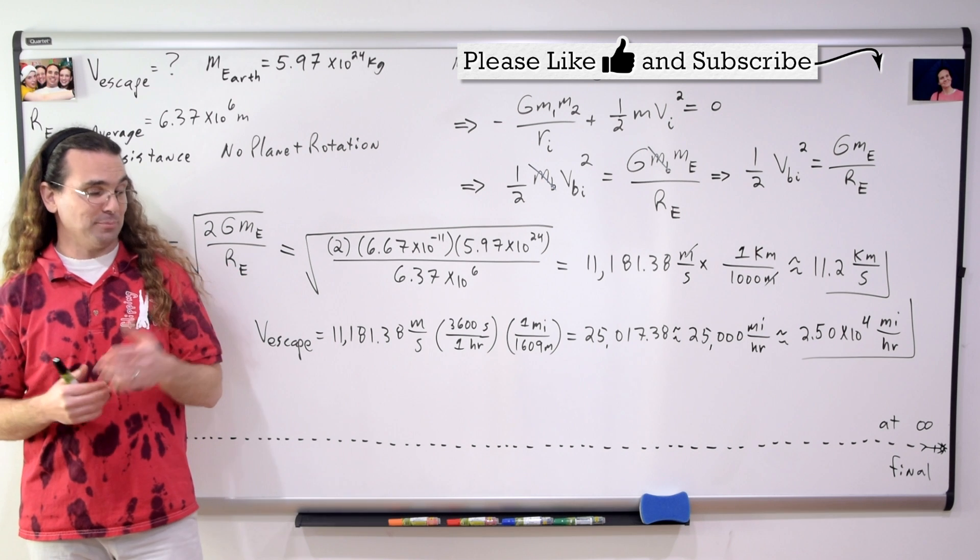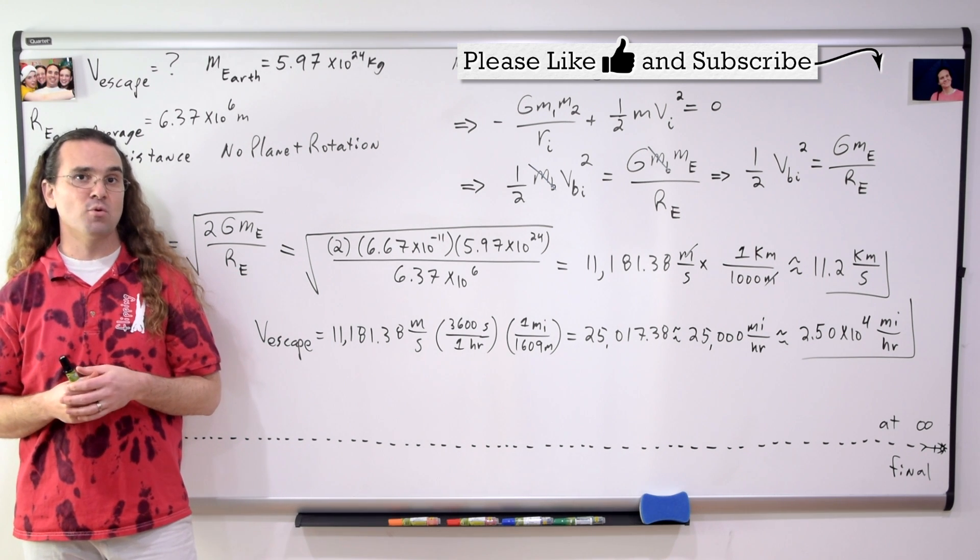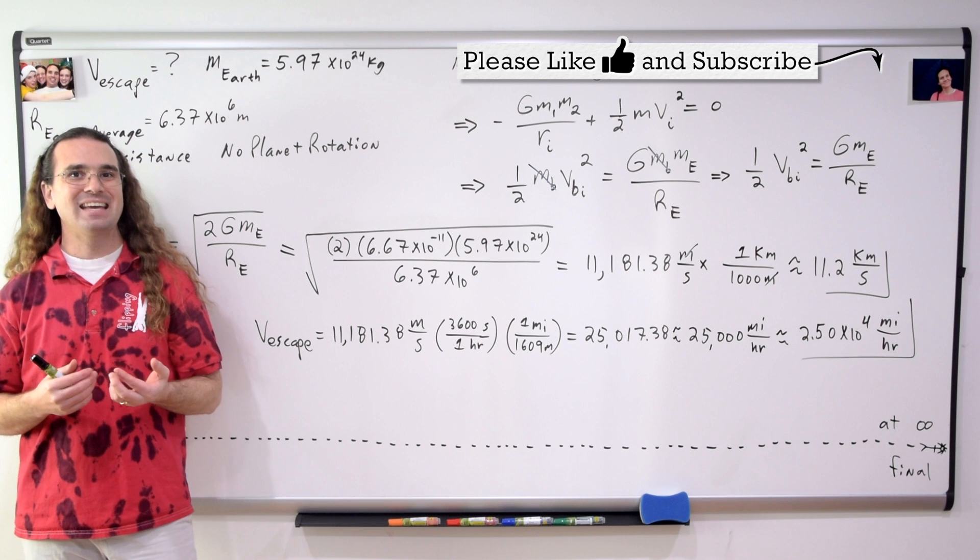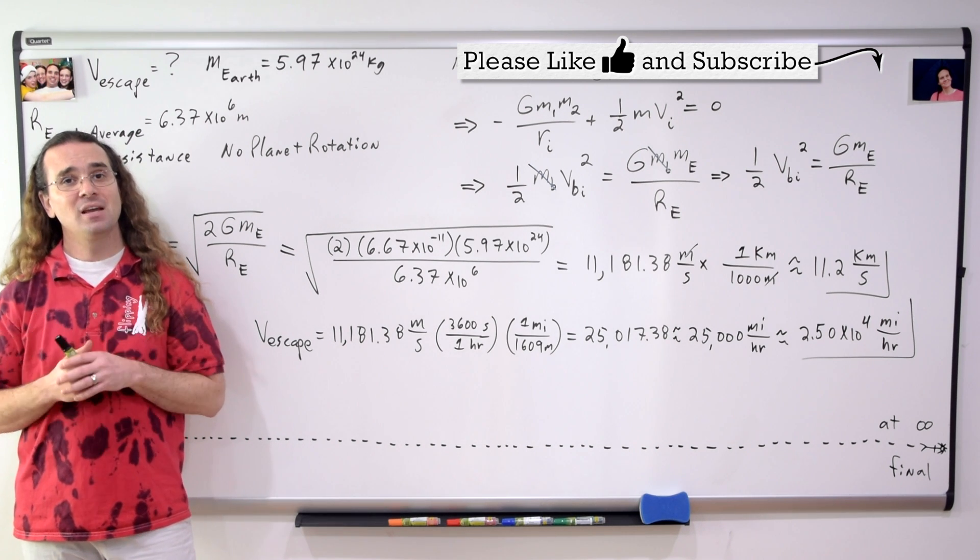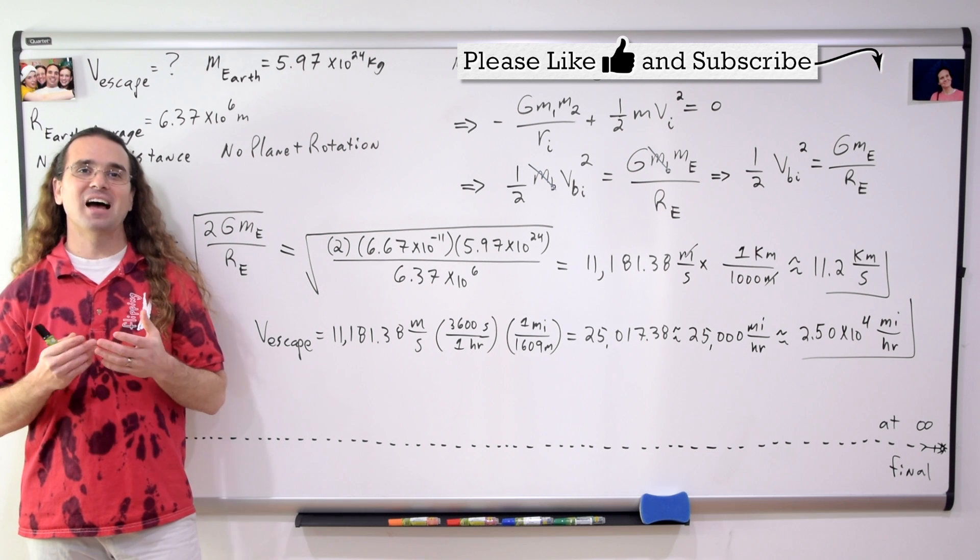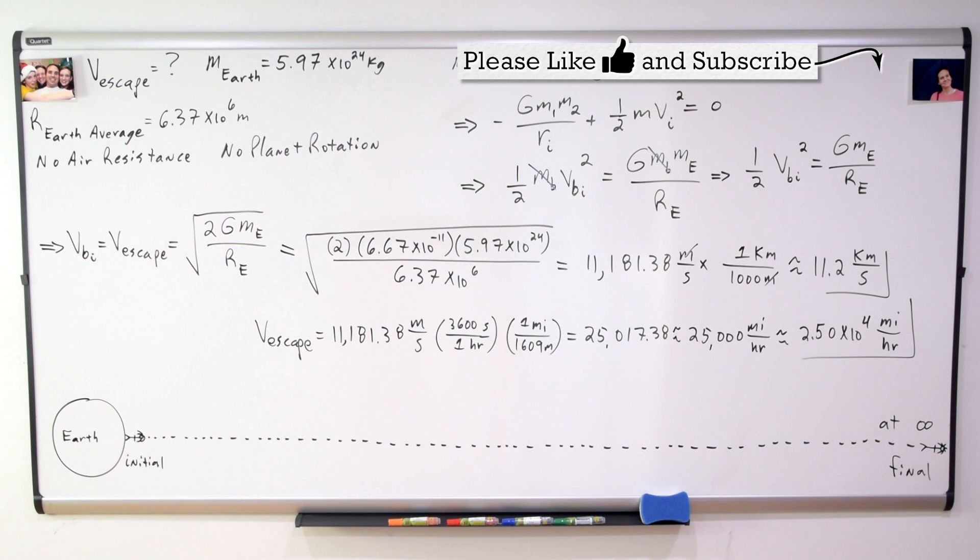Nice. That is absolutely correct, Billy. The initial kinetic energy necessary to completely remove an object from another object is the same as the binding energy which exists between those two objects. Thank you very much for learning with me today. I enjoyed learning with you.